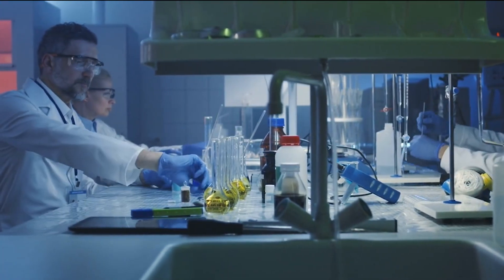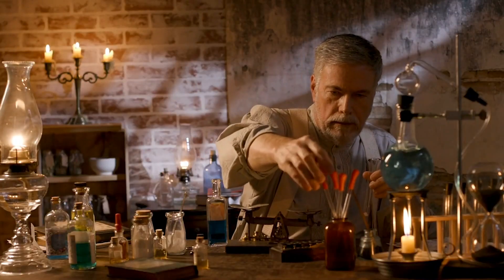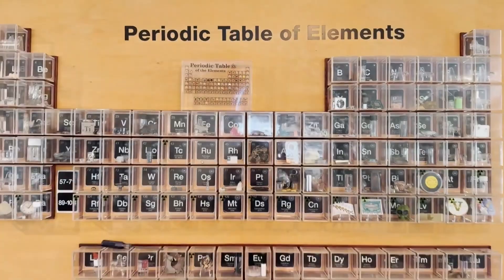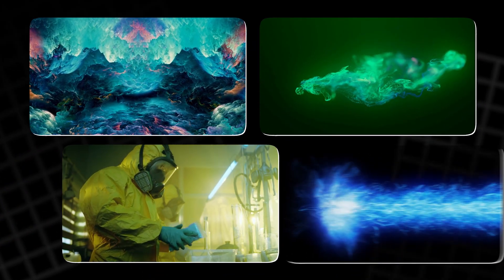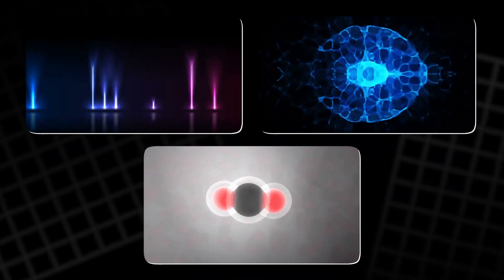This simple yet fascinating experiment reveals the hidden beauty of elements known as noble gases. Positioned on the far right side of the periodic table, these gases are helium, neon, argon, krypton, xenon, radon, and the recently discovered oganesson.